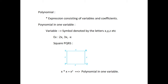Next, polynomial in one variable. A variable is denoted by a symbol that can take any real value. We use the letters x, y, z, etc. to denote the variables. For example, 2x, 3x, minus x are algebraic expressions. All these expressions are of the form of a constant and x. The values of the constants do not change in a given problem, but the value of a variable can keep changing.